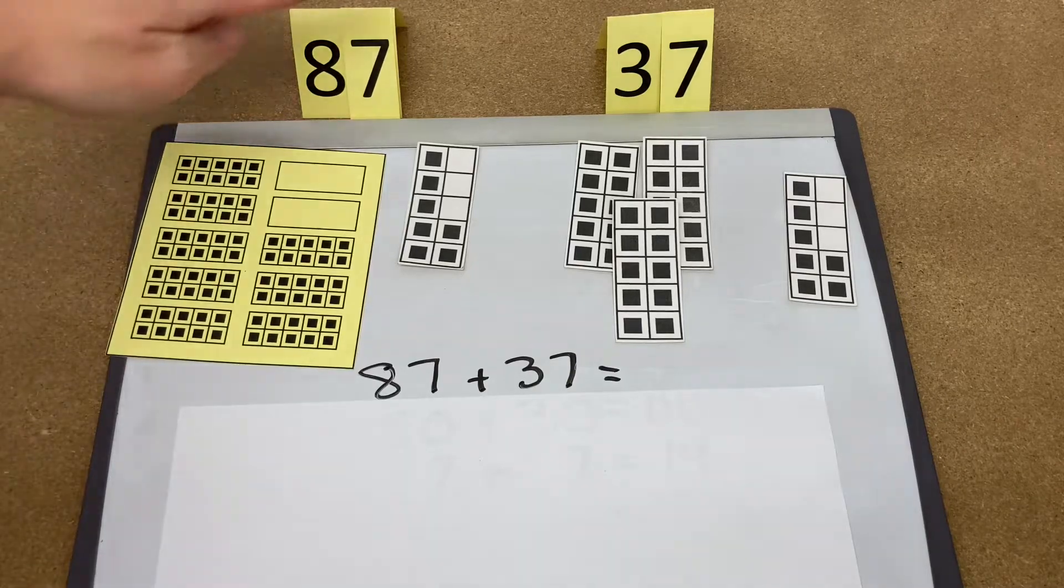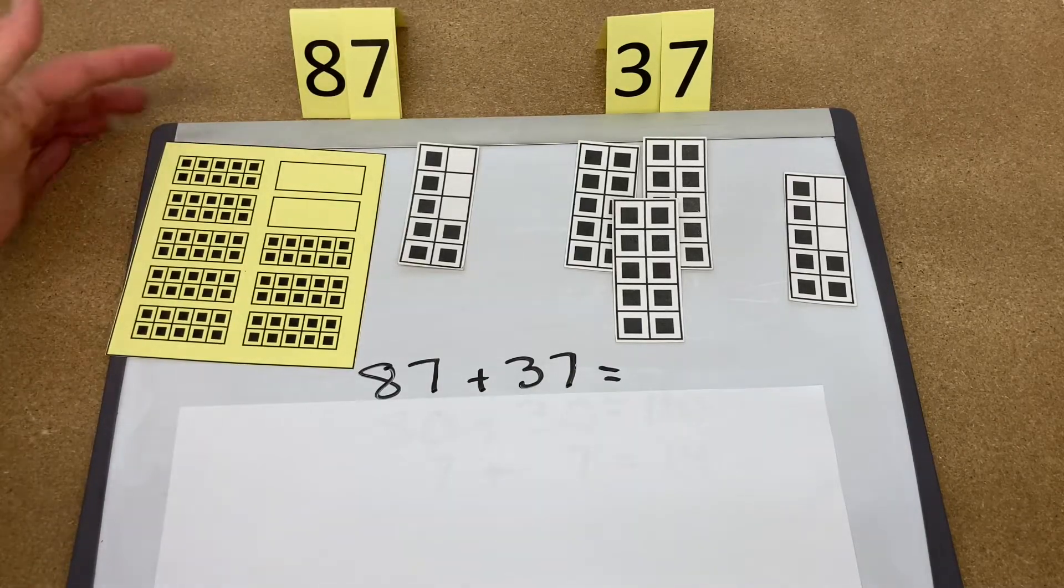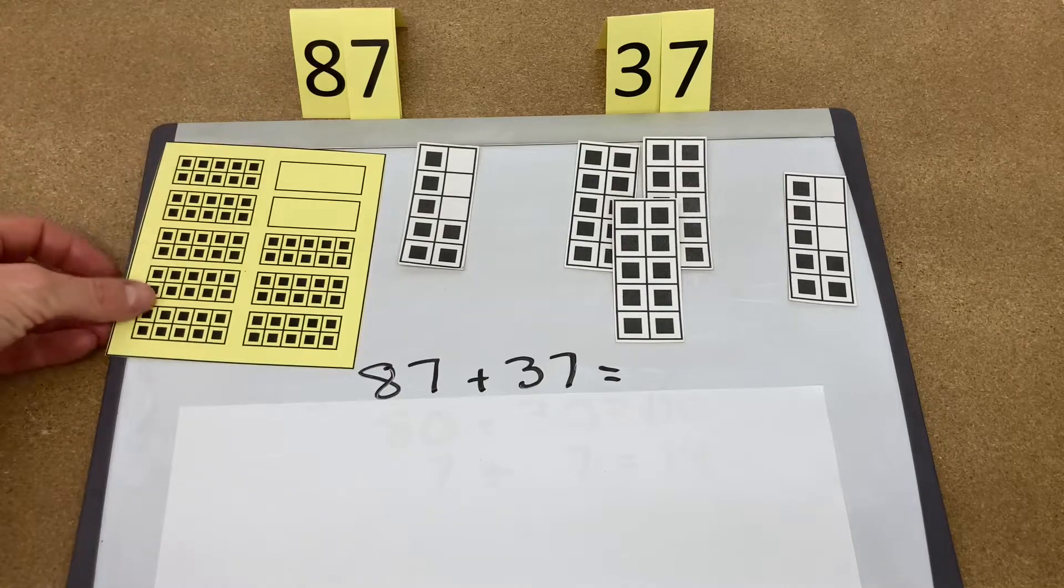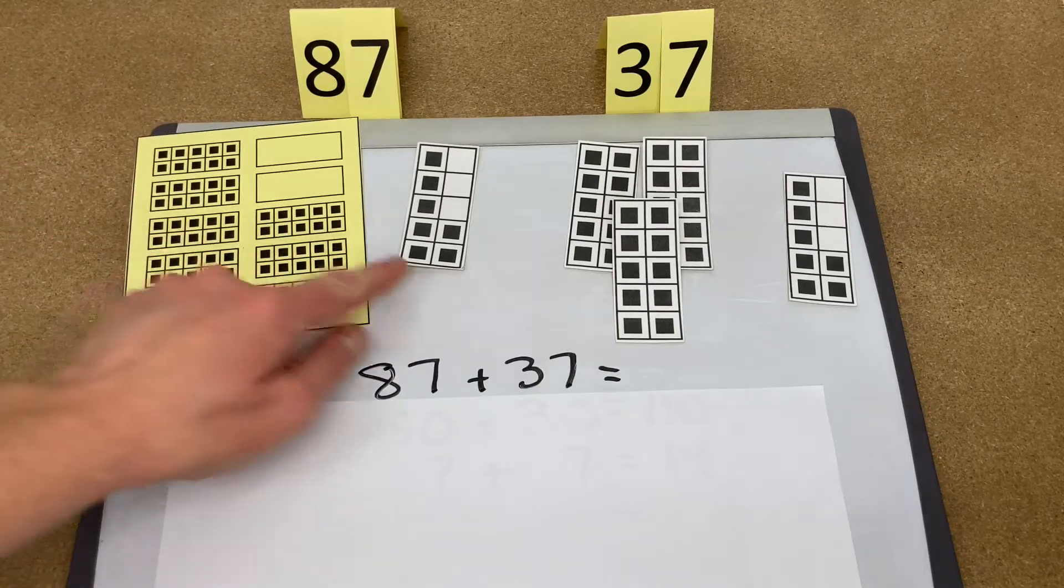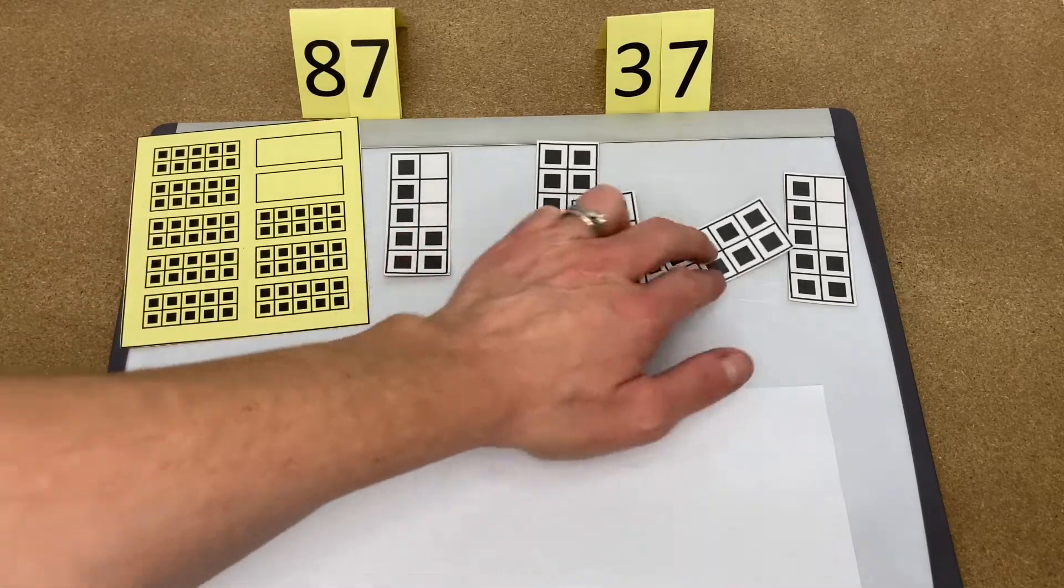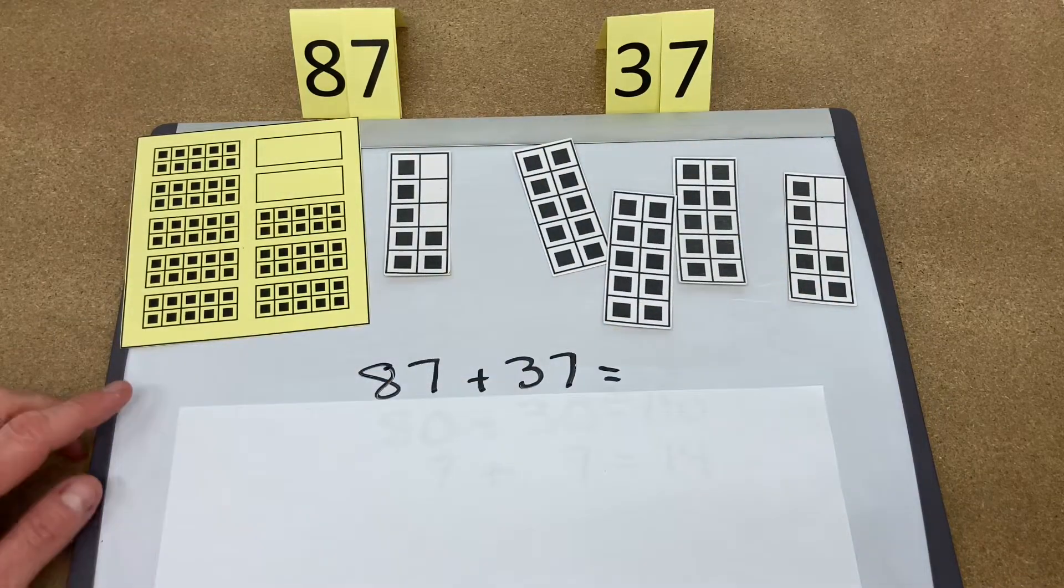To add numbers such as 87 plus 37 with regrouping of tens and units, we look at the number 80 with the 7 and then 30 plus the 7. So we first want to take the tens.